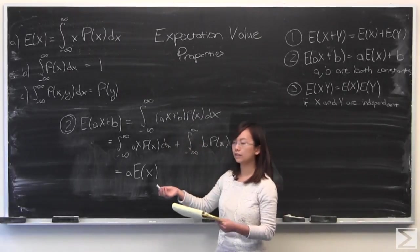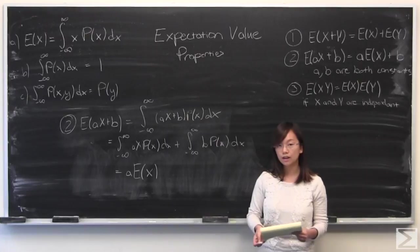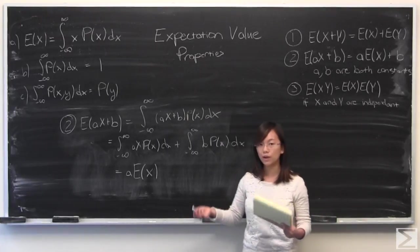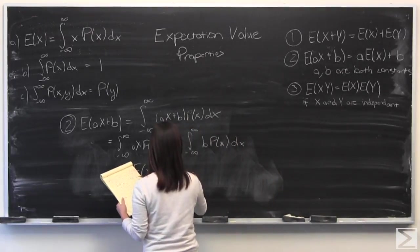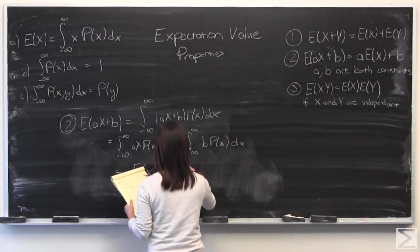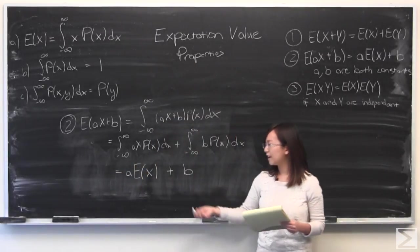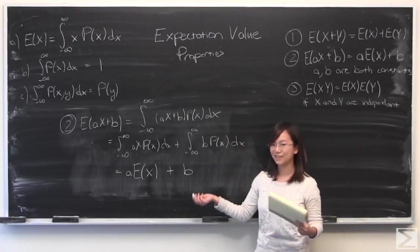Using property B up there, if you take the integral from negative infinity to positive infinity of the probability density function of x, you're just going to get 1. So from this, you're going to get 1 times b because we pulled b out of the integral. So it's just a·E(X) + b. That's all we need to do.